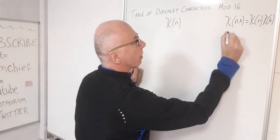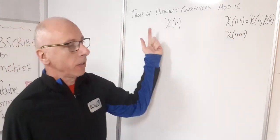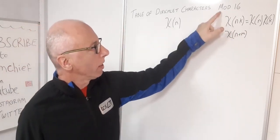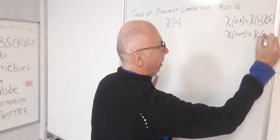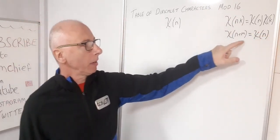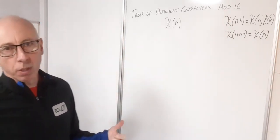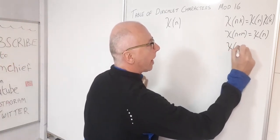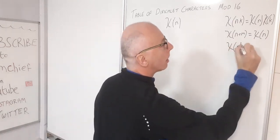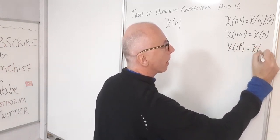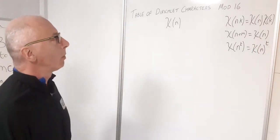Another property is that chi of n plus m, where m is the modulus (in this case 16), is still equal to chi of n, because this function is completely periodic modulo 16 as you would expect. And one other property we'll need: chi of n to the power of some index T is the same as chi of n to the power of T. Those are three properties that are really helpful for building our table.